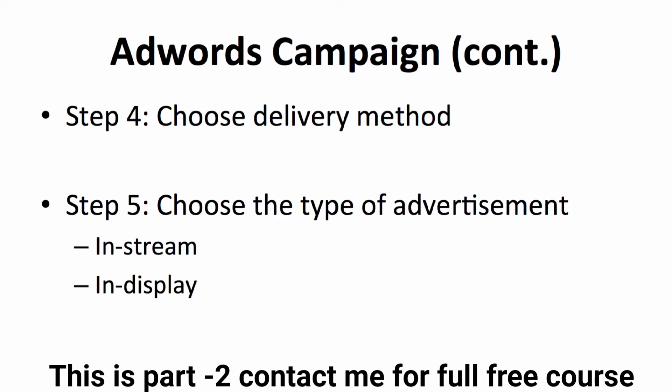The next step is to choose the type of advertisement for your video. There are two types: in-stream and in-display. The in-stream video ad plays before another video, and viewers can choose to skip after a few seconds. You pay only if viewers watch for 30 seconds or to the end, whichever comes first. For in-display video, it includes an image and some text, appearing in search results, YouTube related videos, as a YouTube overlay, or on partner websites. You only pay when someone clicks on it.